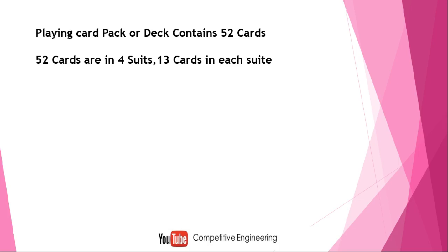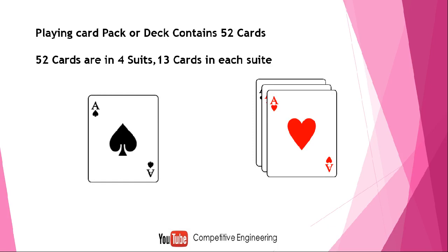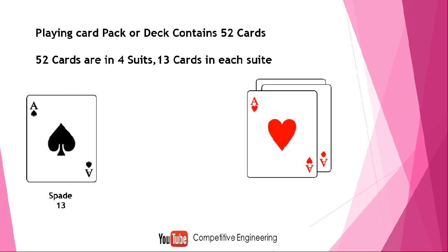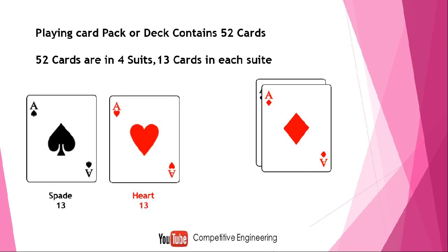The first suit is called Spade. It is looking like a tree. There are 13 spade cards and spade is always in black color. The second suit has a heart symbol — it is called Heart. It is also 13 in number and it is always in red color.